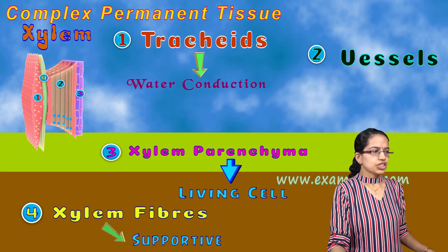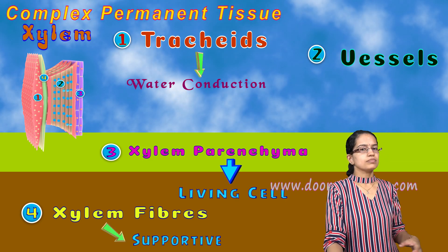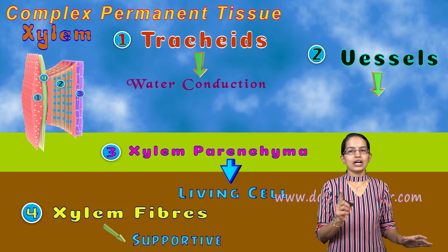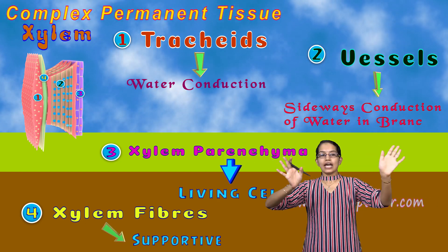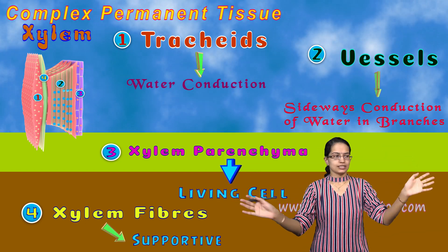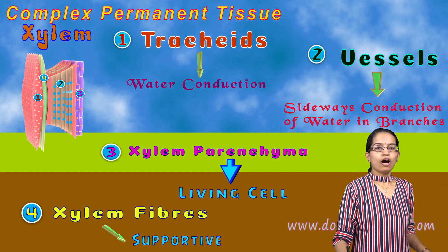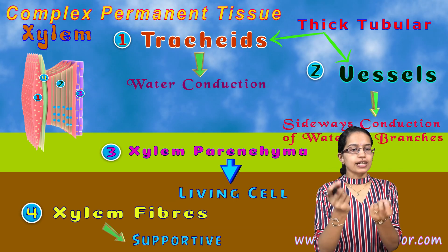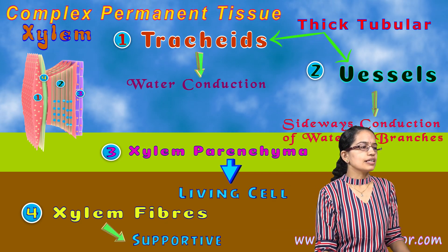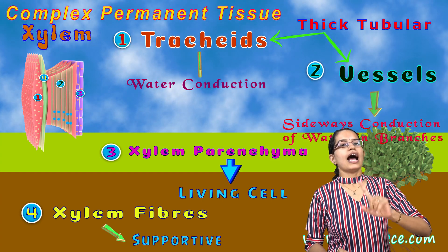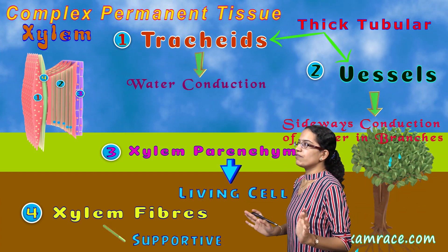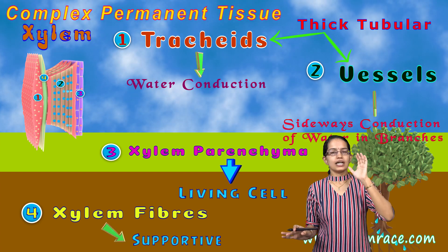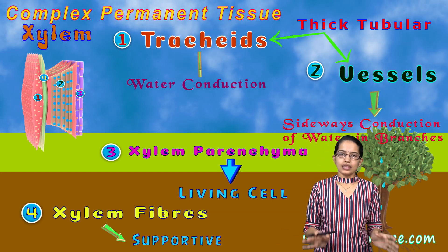Tracheids help in conduction — whether in gymnosperms or angiosperms, the main function of tracheids is conduction of water. Vessels have the unique function of conducting water sideways, essentially spreading water to the branches. Both vessels and tracheids have a thick tubular structure; their movement is mostly vertical, while vessels move specifically sideways. As they mature, they become dead cells.